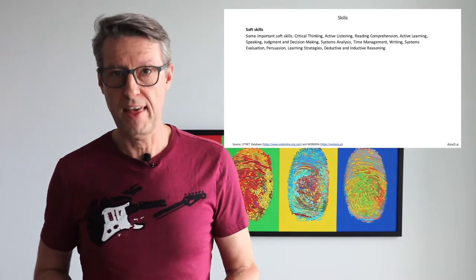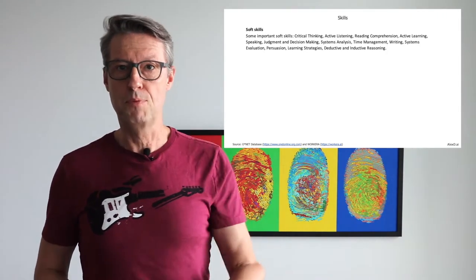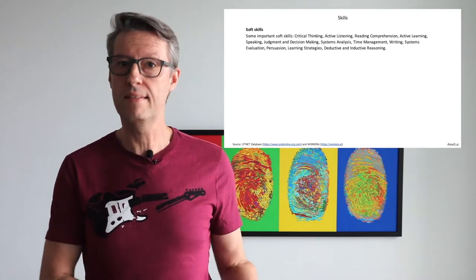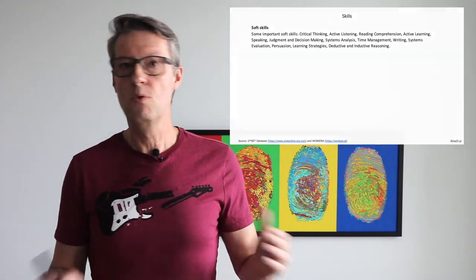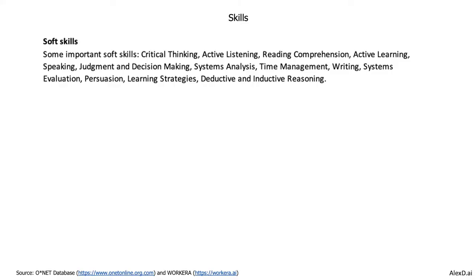It's important to really have critical thinking, it's important to communicate, speak, have reading comprehension, to listen actively, to be someone that can judge and make decisions. It's important to have systems analysis kind of skills, to manage correctly your time because sometimes we don't know exactly how much time we will take to end a project involving AI. It's also important to have skills from systems evaluation, persuasion, and inductive and deductive reasoning. Both are soft skills and maybe it's not easy for just one person to have all the skills, but you can combine these skills in more than one people in your team.